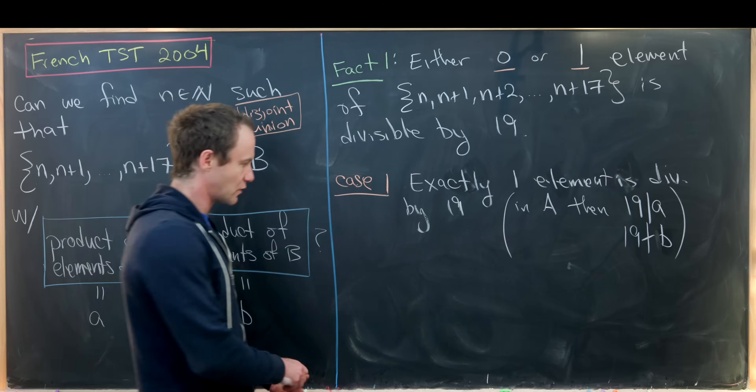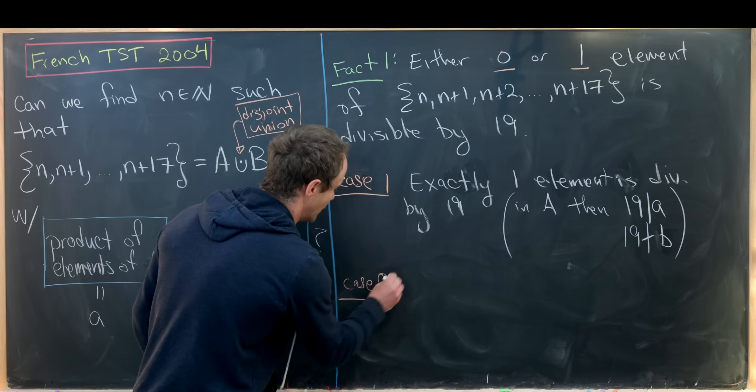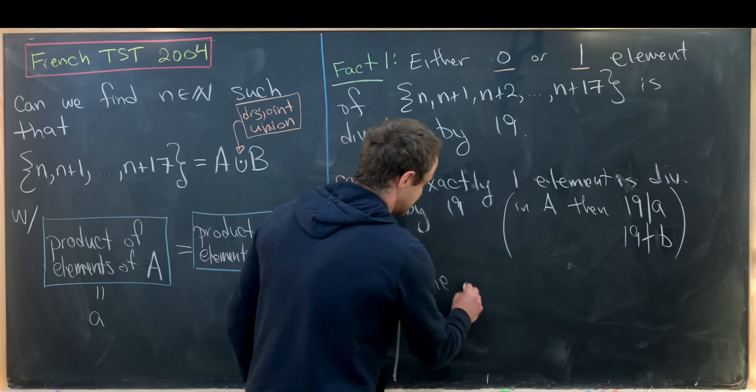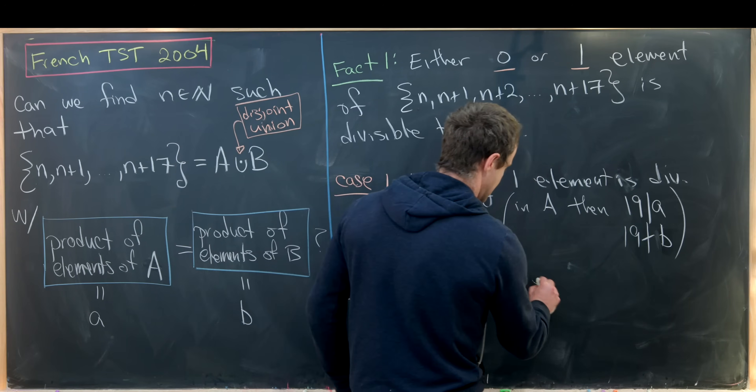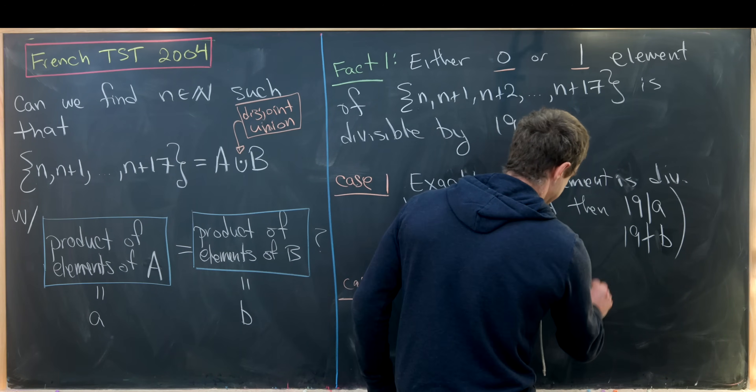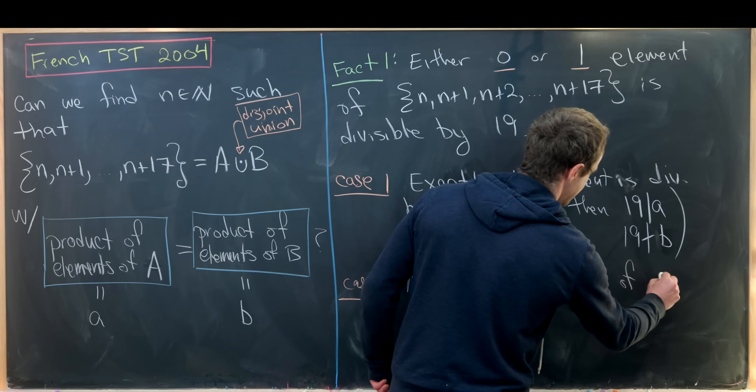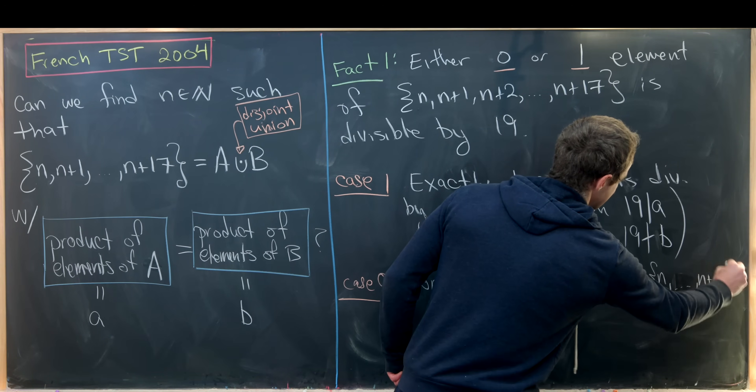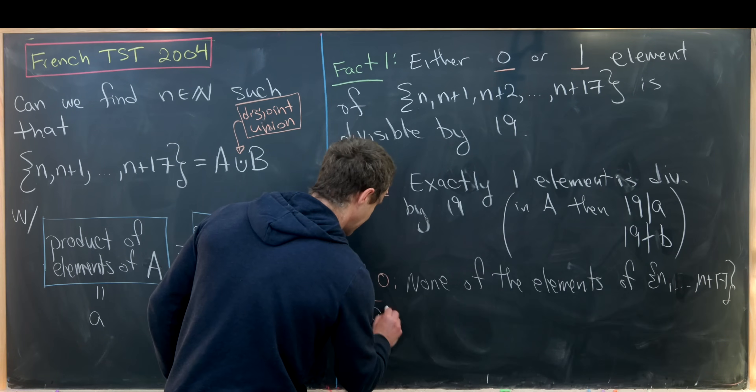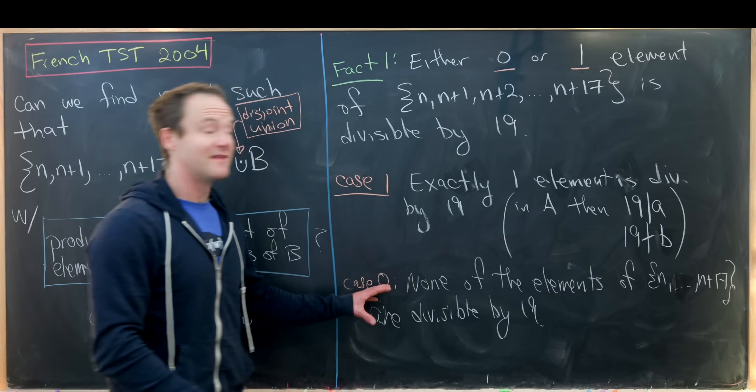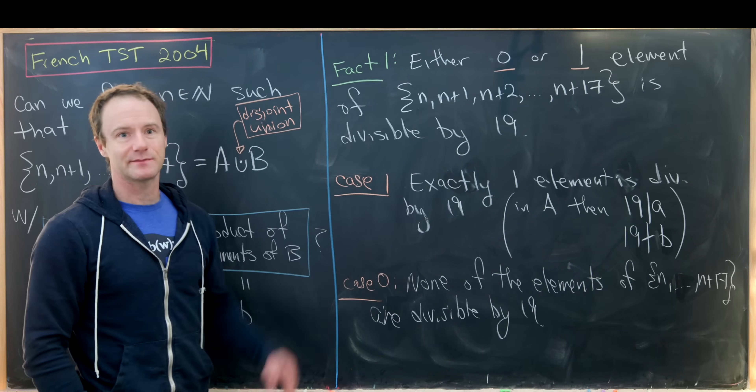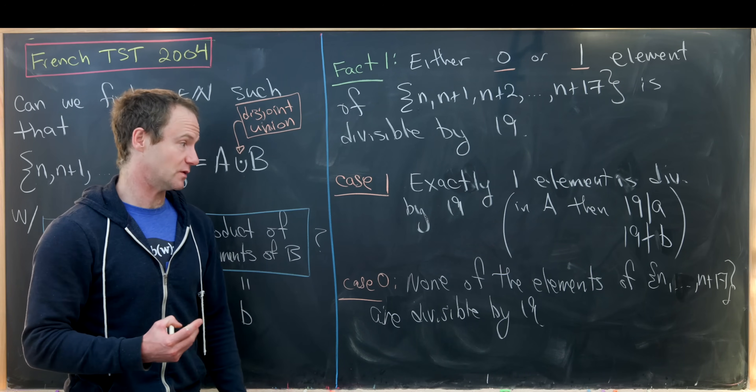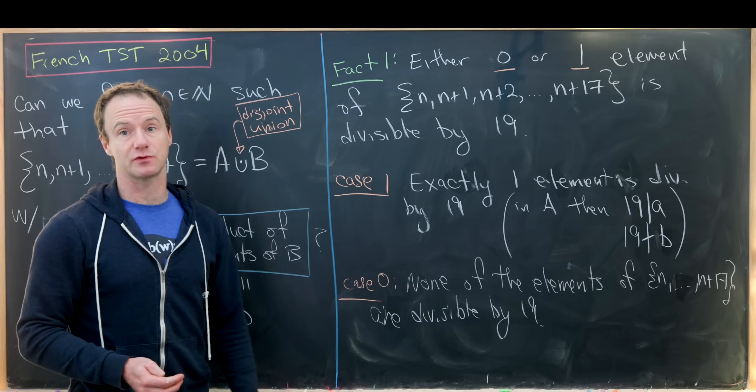That means we're really into case zero, if you will, which is none of the elements of {n all the way up to n+17} are divisible by 19. That's the case that we'll work on. We'll bring that up to the top and also review a couple of nice tools that we'll need in order to finish this proof off.